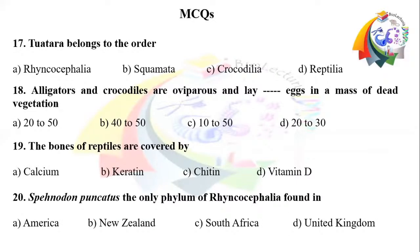Question number 17: Tuatara belongs to the order. Option A: Rhynchocephalia. Option B: Squamata. Option C: Crocodilia. Option D: Reptilia.